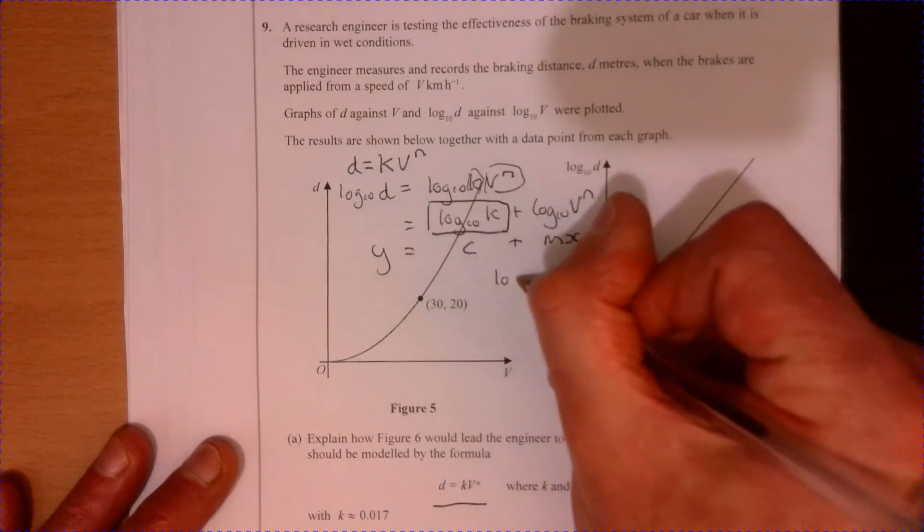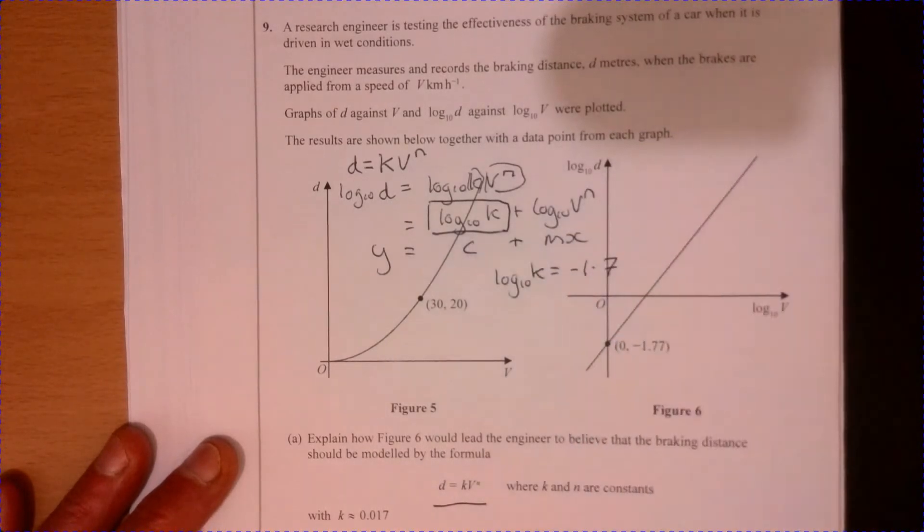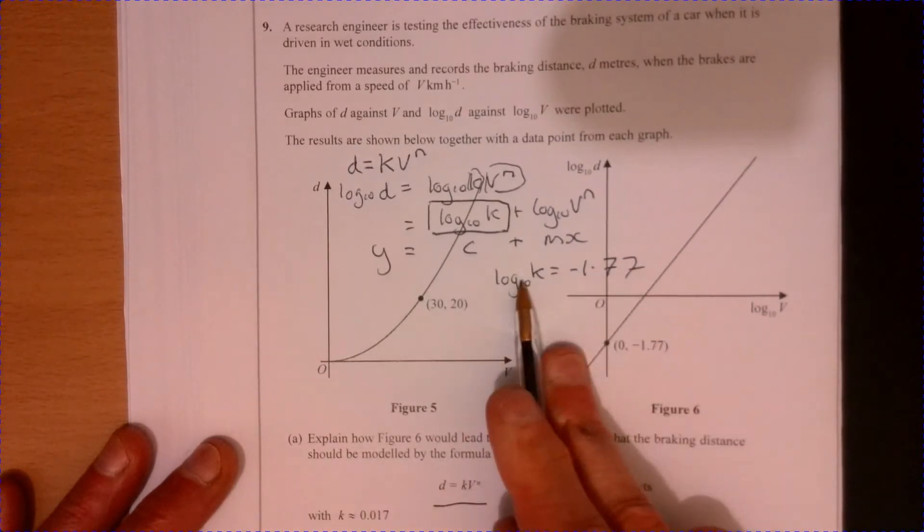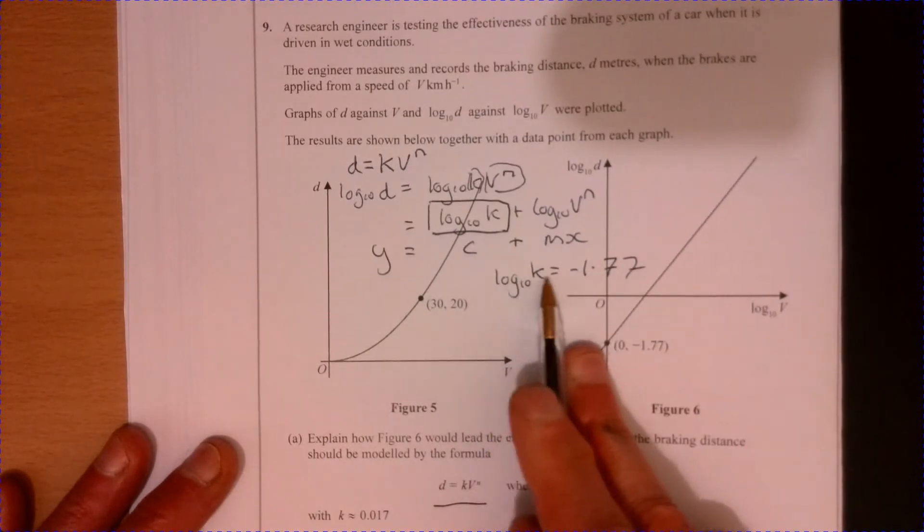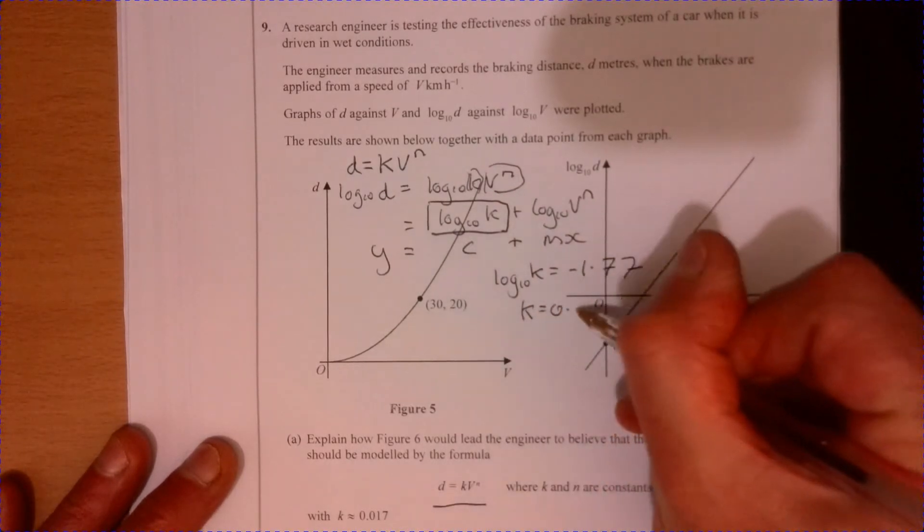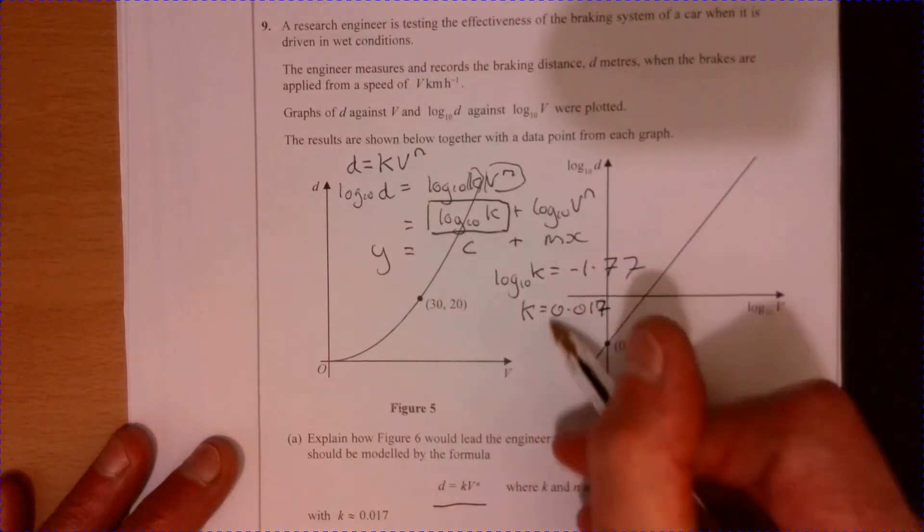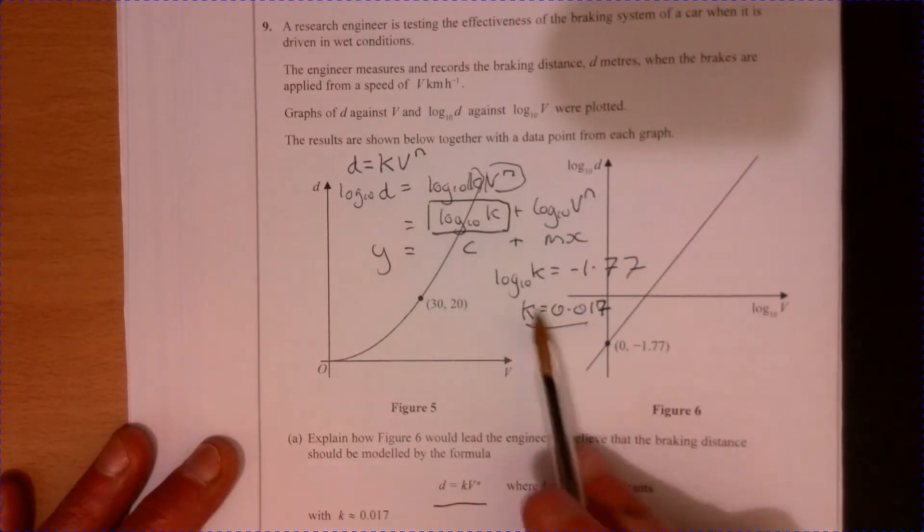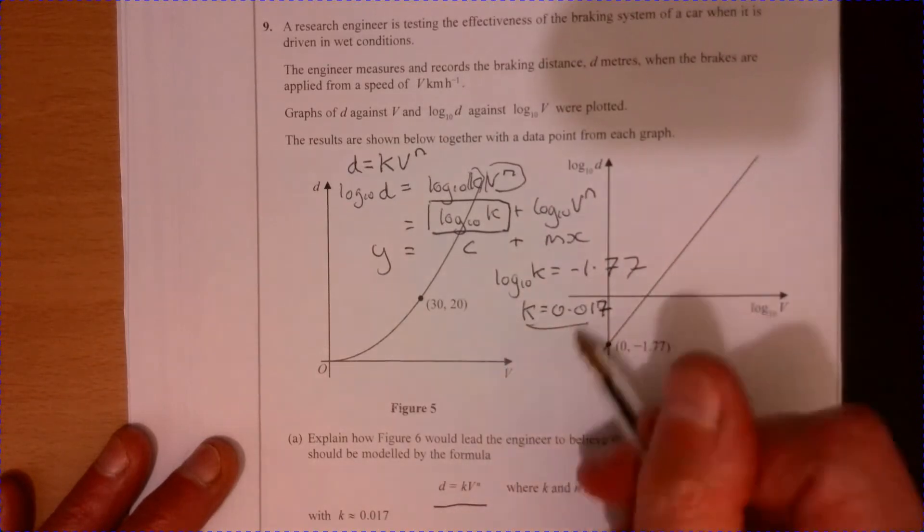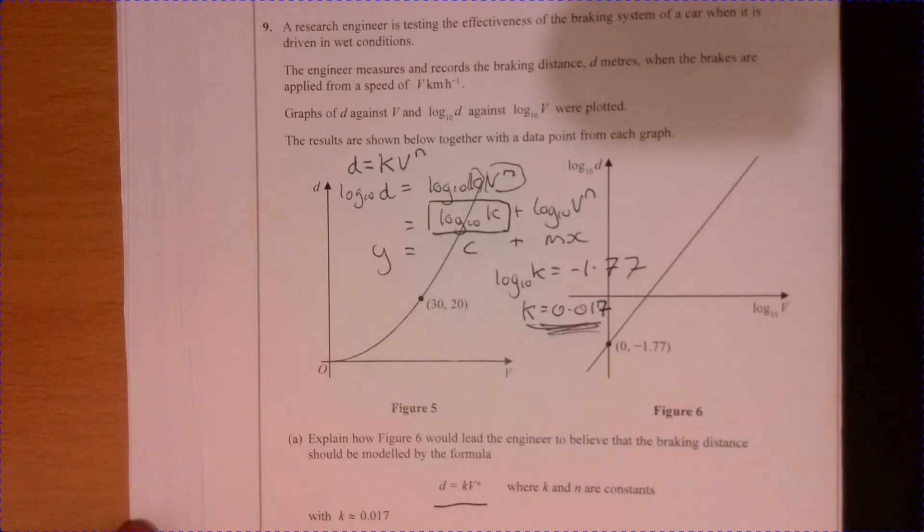Looking at this, we've got this value just here that's got to be this bit. So we can write log base 10 k equals minus 1.77, and that will give us k equals 0.017. If you just do 10 to that, that will give you that answer.